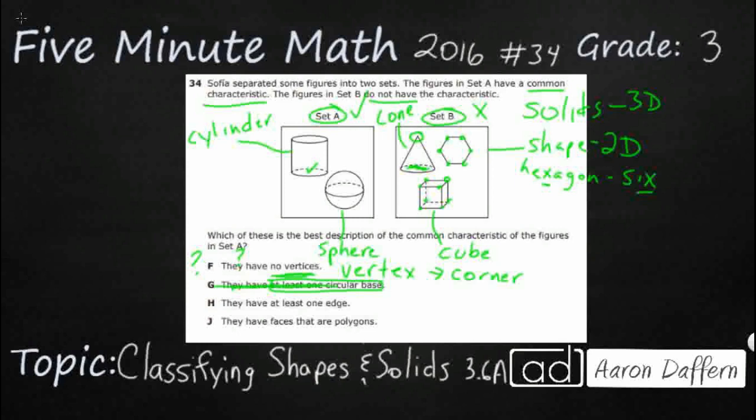Have at least one edge. Well, edges are straight. And there are no straight lines in set A. These are circular lines on my cylinder, so they do not count. And then finally, J.